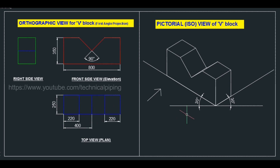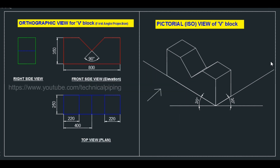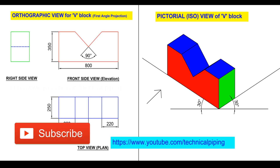This is how you draw from an orthographic view to an isometric or assembling view. For making piping isometric drawings, you should learn this type of orthographic view conversion to assembling view. Thank you for watching - if you like this video, please share and comment.